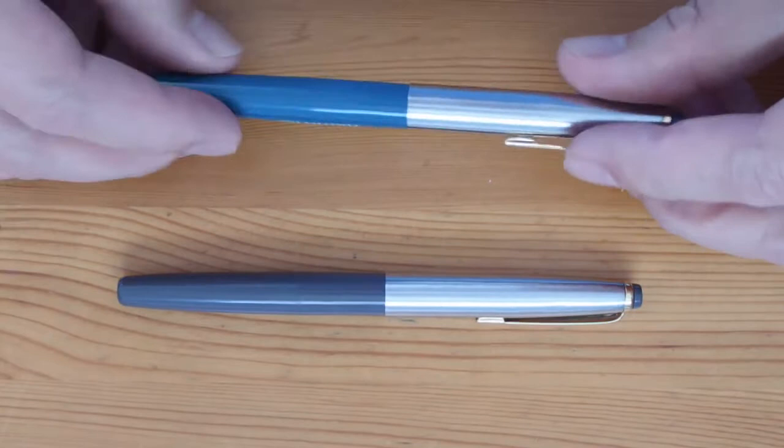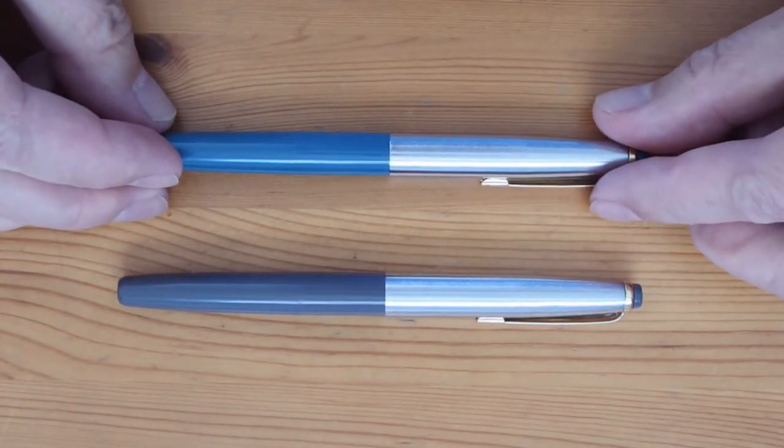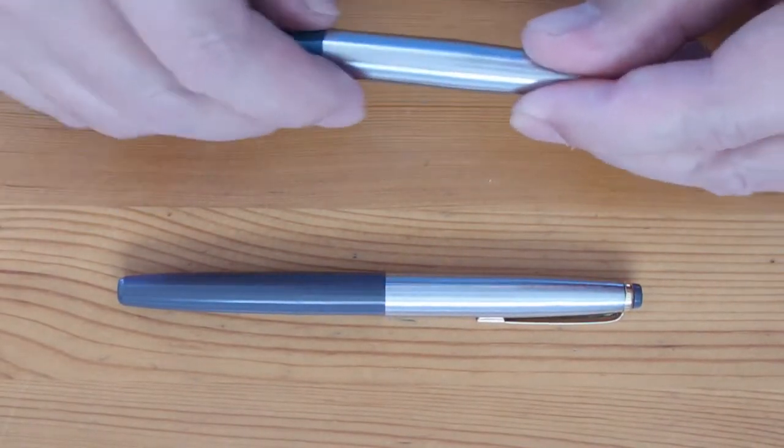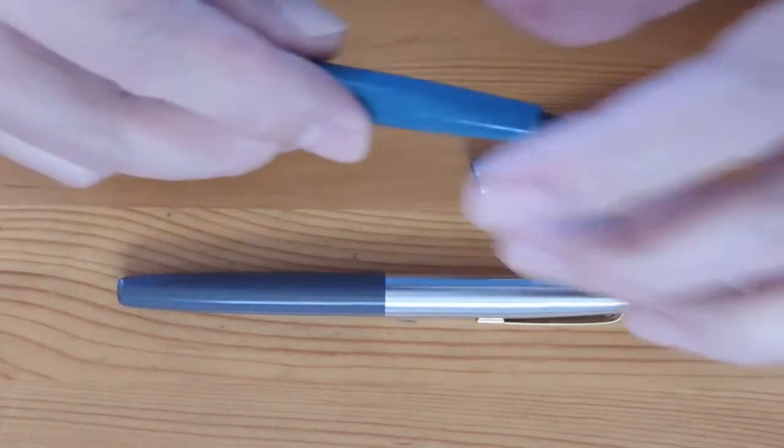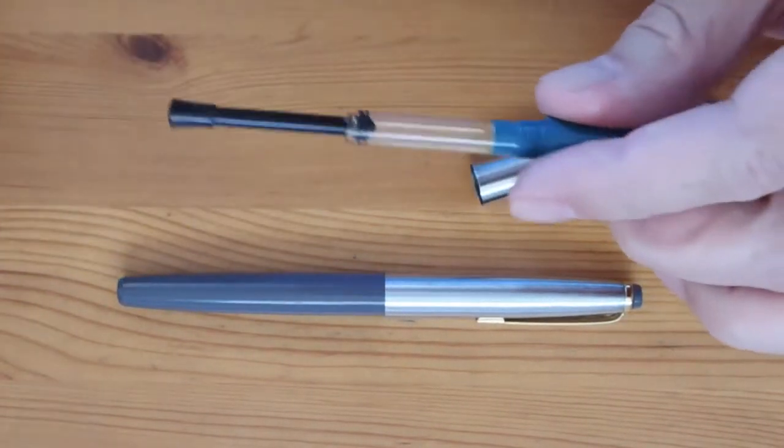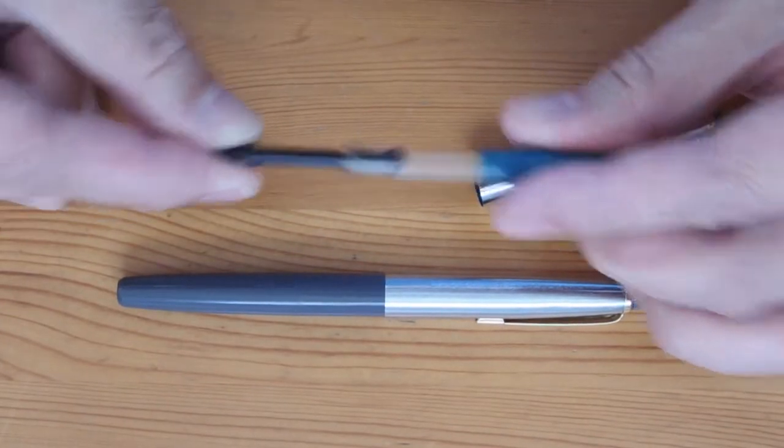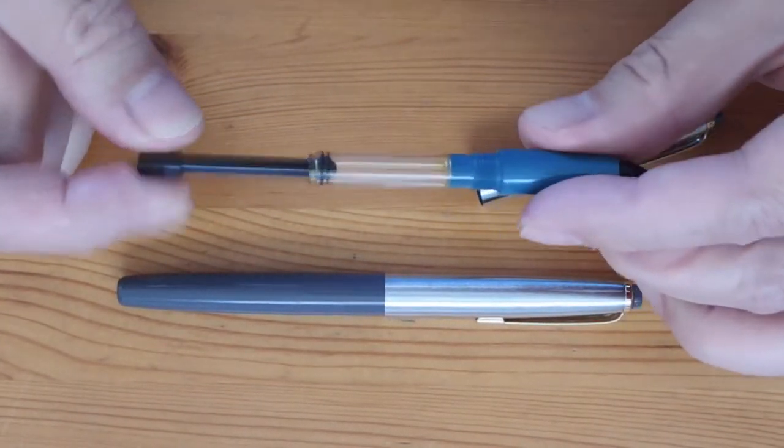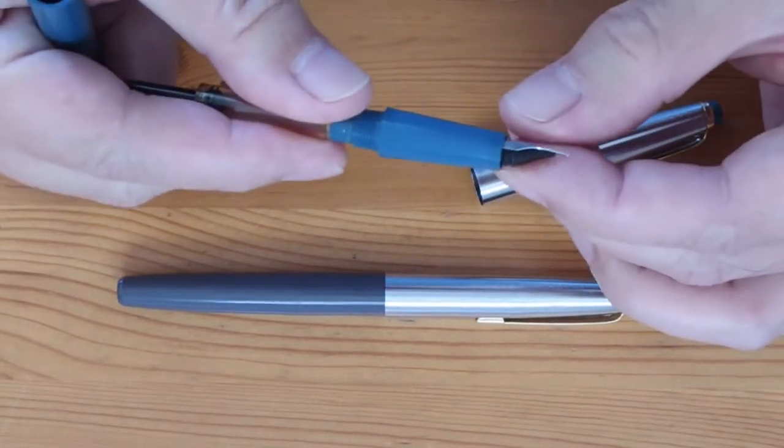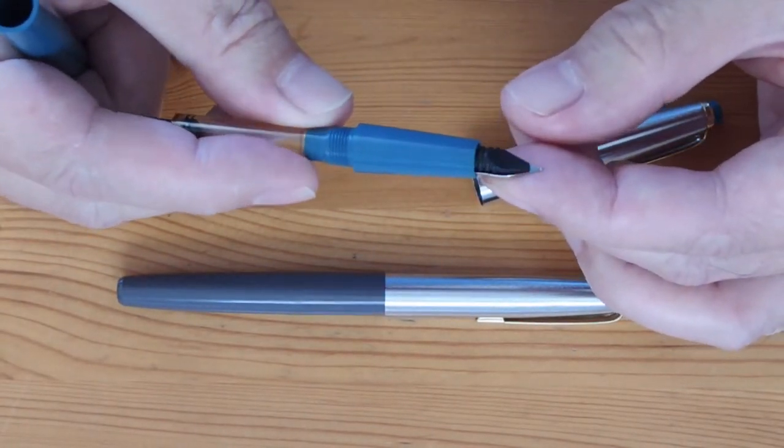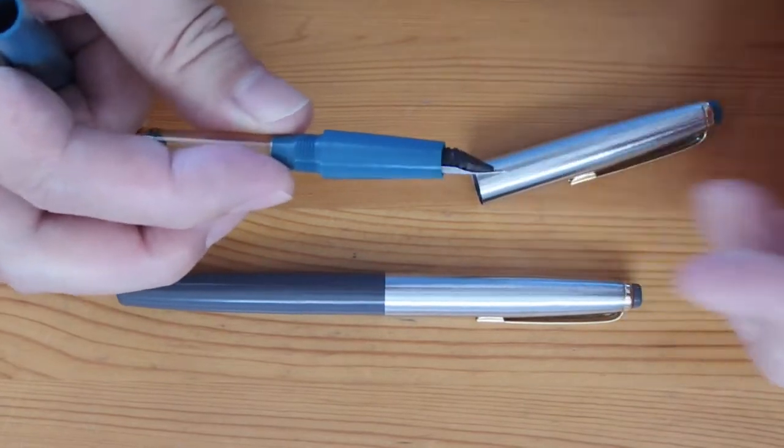Generally speaking, Canwright pens are designed to be user-serviceable and it is no exception. The procedures required for operation and servicing are quite intuitive. The syringe filler used here is simplicity itself and obviously it unscrews from the back of the section for cleaning. The nib feed comes out from the front quite easily too, you just pull it out.